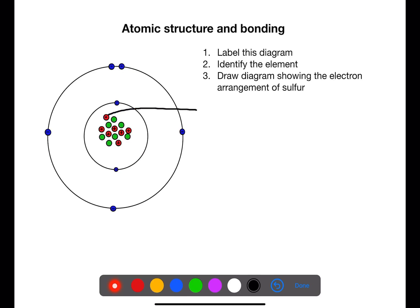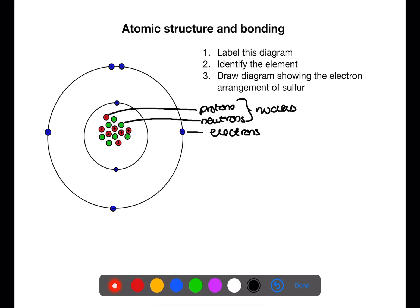Within an atom we have protons and neutrons. Protons are positive and neutrons have no charge, and together they make up the nucleus of the atom. We also have electrons which are in energy shells and they are negatively charged. This atom has seven protons — this is the atomic number. If you look up atomic number seven on the periodic table you'll find that this atom is nitrogen.